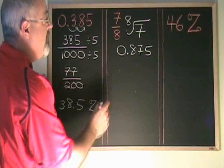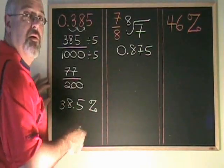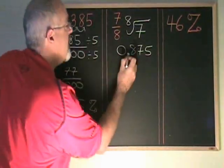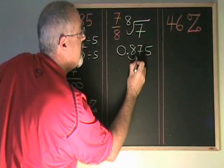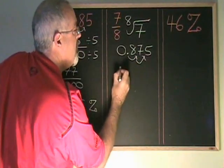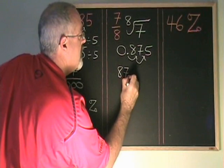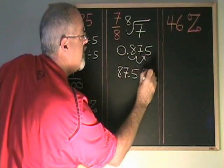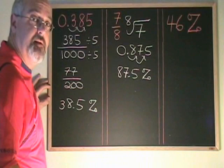Now we have to convert 0.875 into a percentage. Again, we move the decimal two spaces to the right and we get 87.5 percent. Don't forget the percentage sign.